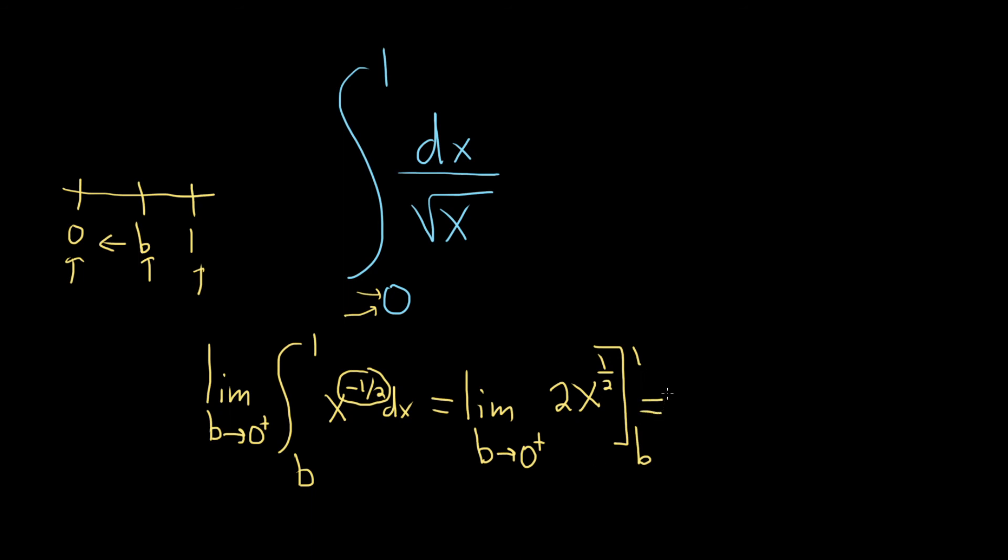So this is equal to the limit as b approaches zero from the right. First you plug in the one, so you get two times one, because one to the one-half is one. Subtract and then plug in b, so two b to the one-half.